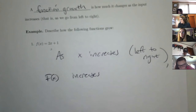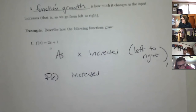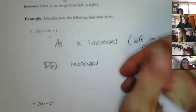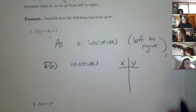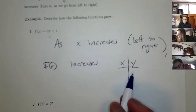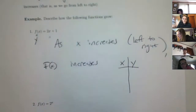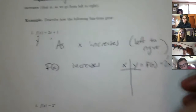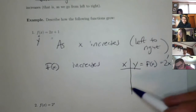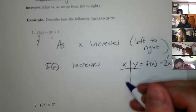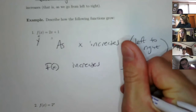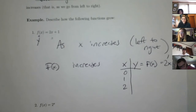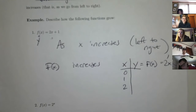If you wanted to, like one person said, you could talk about how much it's increasing. You could even make a little table. Remember, y is usually taken to be f of x. Here, f of x is 2x plus 1. So if I want to make a chart of coordinates on my function, I can just plug in some random numbers — say 0, 1, and 2. I just want to see how the y values are changing.